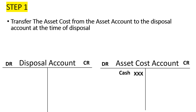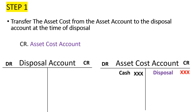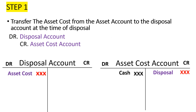Step number one: we are going to transfer the cost of the asset to this disposal account. The asset account has a normal debit entry. So because it has a normal debit entry and we want to remove this cost from the asset account, we are going to credit the asset account with the amount of the cost of the asset. And then we shall debit the asset disposal account. That's the first step.